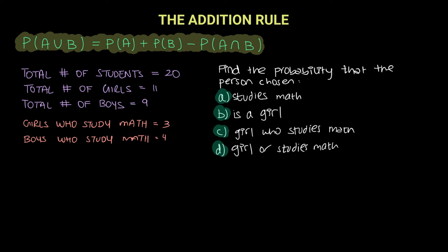The question says find the probability that the person chosen studies math. So let's look at our pool of interest. How many people study math? We can clearly see there are 3 girls and 4 boys who study math, so there are a total of 7 students out of 20 who study math. So our probability is 7 over 20.